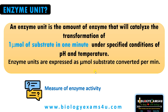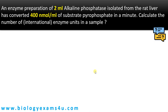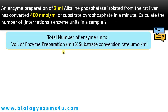Let us work out two problems to understand how to calculate enzyme units in a sample. An enzyme preparation of 2 ml of alkaline phosphatase isolated from rat liver has converted 400 nanomole per ml of substrate pyrophosphate in one minute. Calculate the number of enzyme units in the sample.